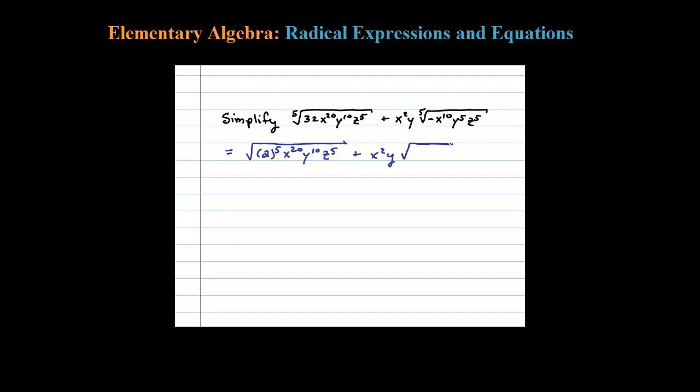Now let's think of that negative as negative 1. Negative 1 can be thought of as negative 1 to the fifth, right? Negative 1 times itself five times is certainly negative 1. Then X to the 10th, Y to the fifth, Z to the fifth. Once we take care of our coefficients like that, it should be easier to simplify.